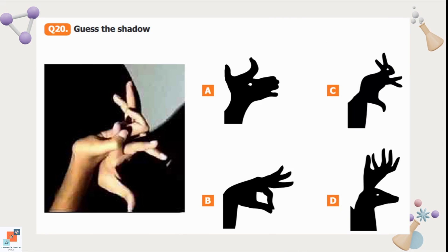Question number 20: Guess the shadow. We can see these two fingers are representing the ears of the rabbit. Then these two fingers are showing the arms. And this thumb at the end is showing the leg. Option C is the correct representation.